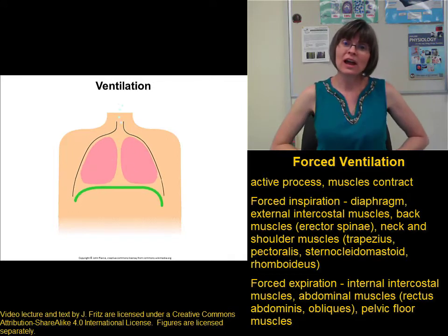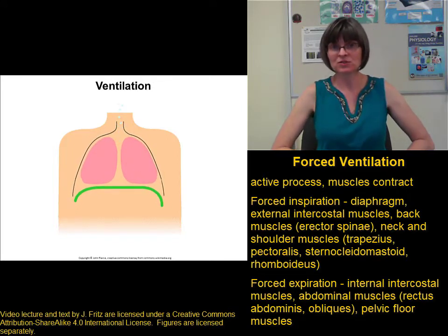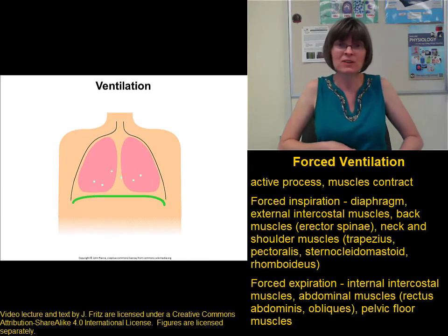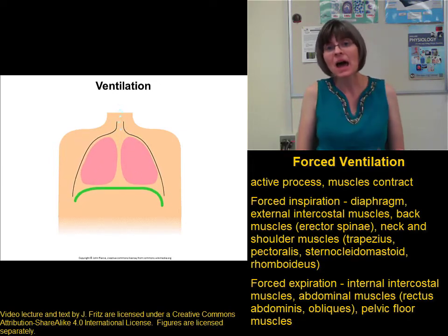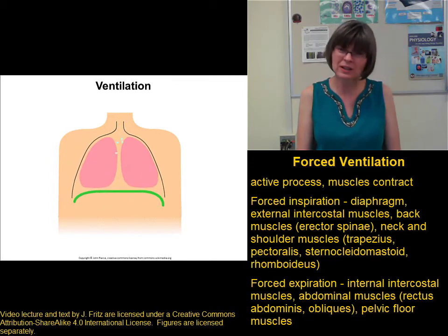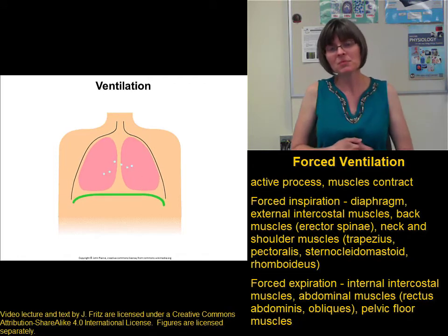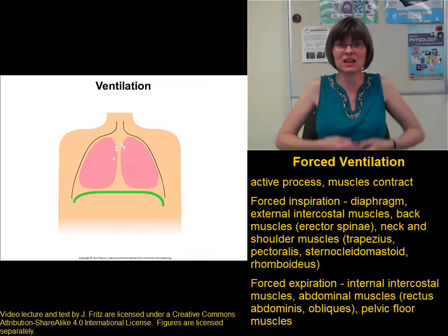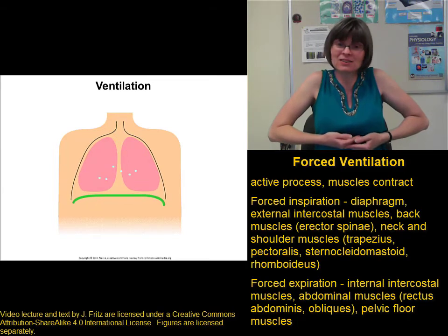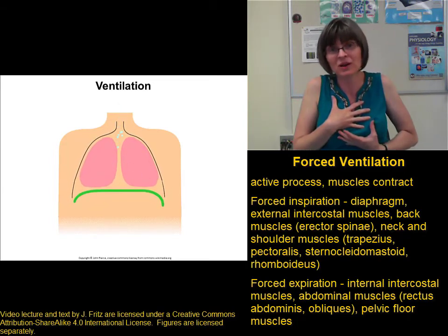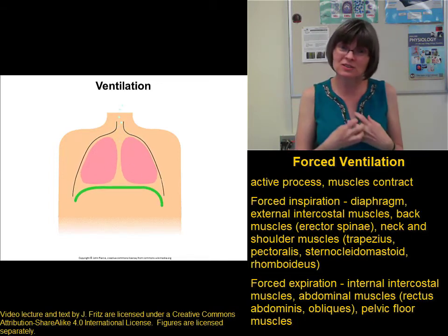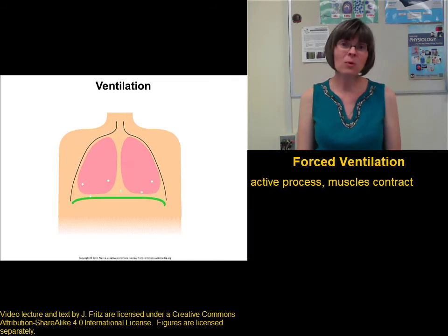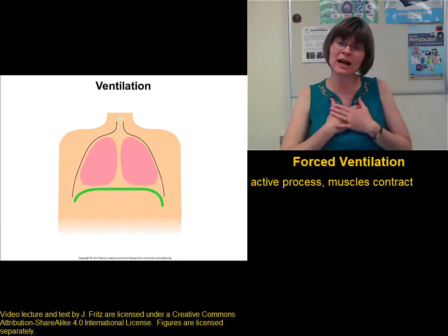Additionally, the abdominal muscles contract during forced expiration — especially the rectus abdominis and the obliques — and the pelvic floor muscles also contract. The reason is that abdominal and pelvic muscle contraction puts pressure on the abdominal organs, shoving them up toward the thoracic cavity against the diaphragm, decreasing thoracic volume, increasing lung pressure, and causing you to exhale more air than you normally would.